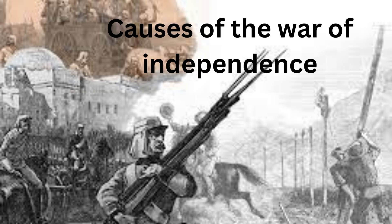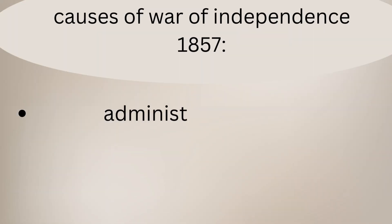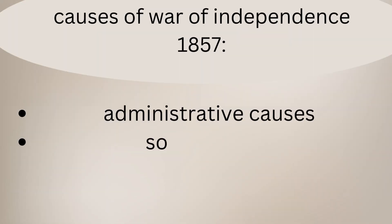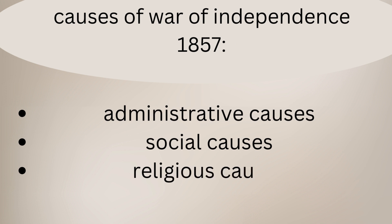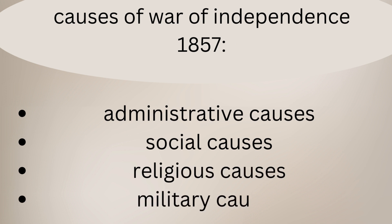Let's start with the causes — what were the different reasons that led to the 1857 war. When we talk about the causes, we divide them into four main reasons: the first one was the administrative reason, then social causes, religious causes, and military causes.